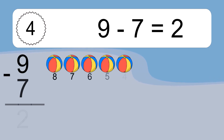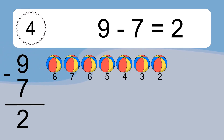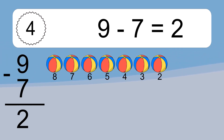9 minus 7 equals what? 9 minus 7 equals 2. Let's count it: 8, 7, 6, 5, 4, 3, 2.